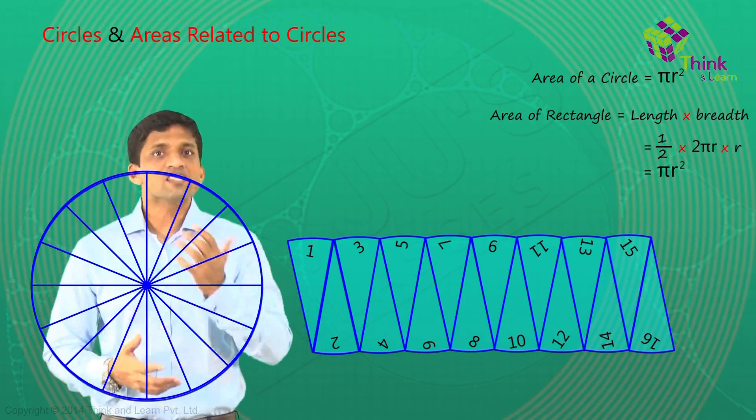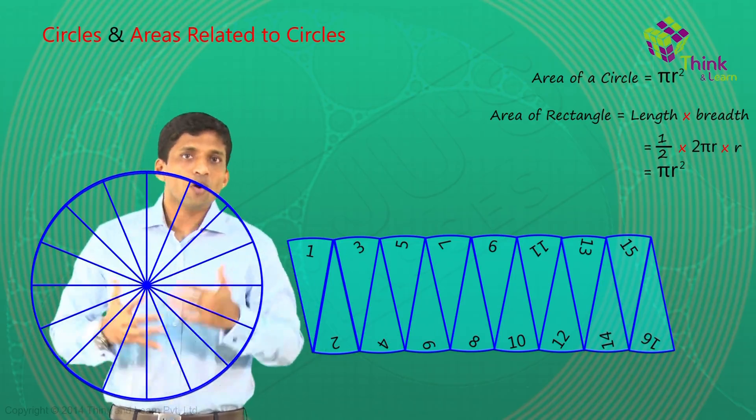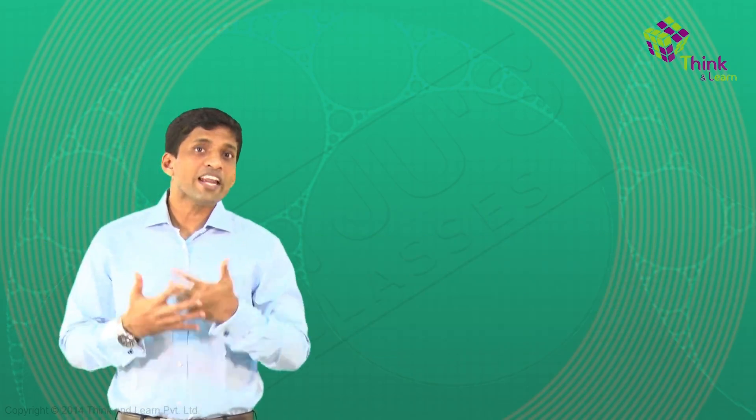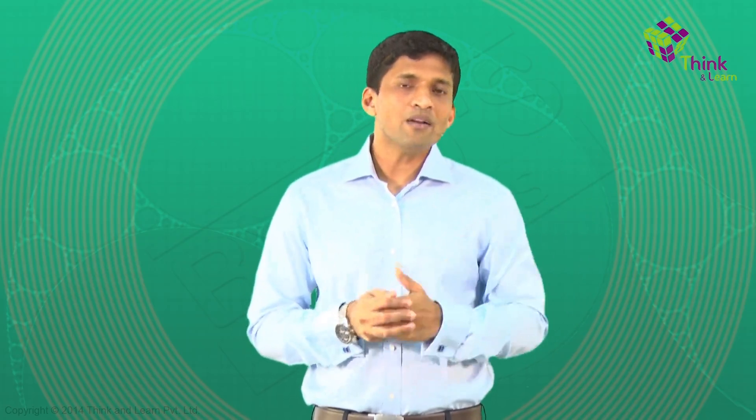Rather than just memorizing area of a circle as πr square, we connected it with a triangle and understood how to visualize it as πr square. We also visualized it using a rectangle, and again we got πr square. When we connect and understand things like this, it becomes really interesting. Now we will start looking at areas related to circles — when multiple circles and polygons are involved, like circles inside a square or circles inside a rectangle. There will be so many patterns which you can see all around us, and we will learn to find the area of specific regions inside these diagrams. Let's see.